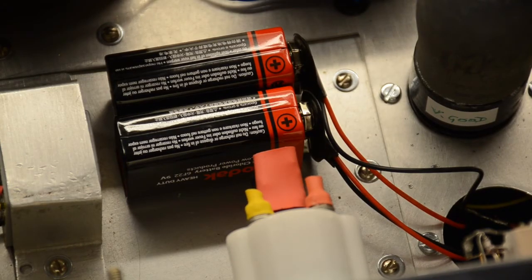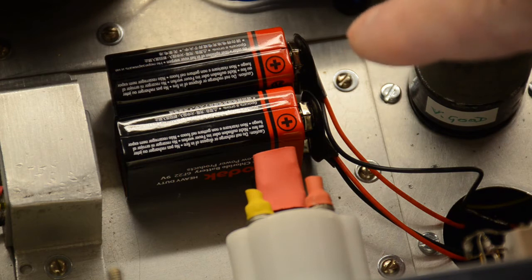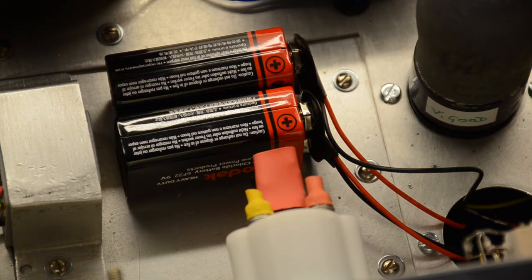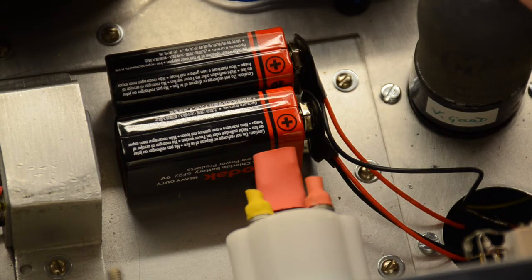In this shot you can see our two PP3 batteries, which are being used to give the negative 18 volts bias for the Thyratron to make it work.